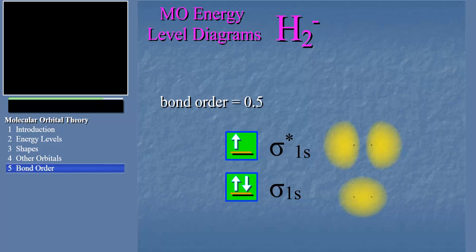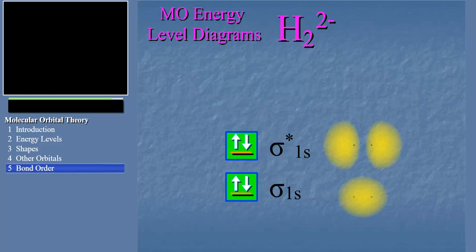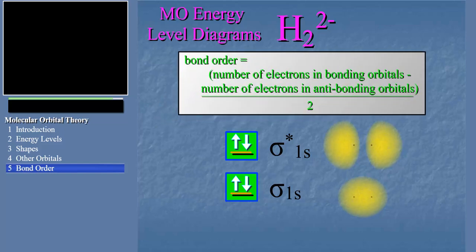Let's see if you got the idea. If we added an additional electron to the ion to make it a 2 minus ion, what would be the bond order then? The bond order would be 1 minus 1, which is 0. We can make a general formula for calculating bond order in a diatomic molecule: the bond order is equal to the number of electrons in bonding orbitals minus the number of electrons in antibonding orbitals, all divided by 2.